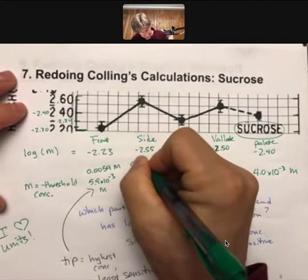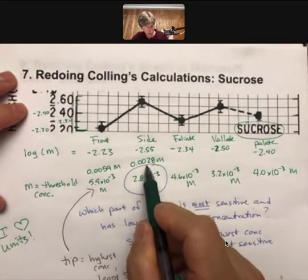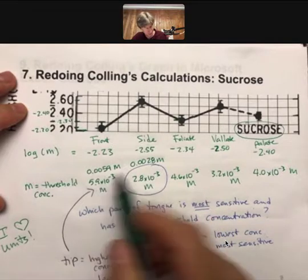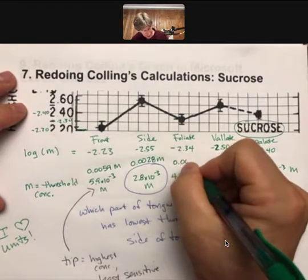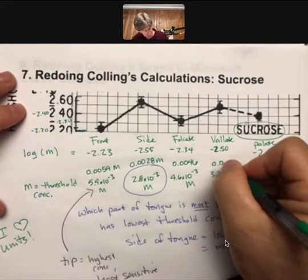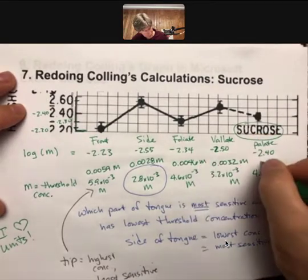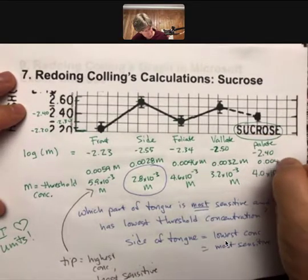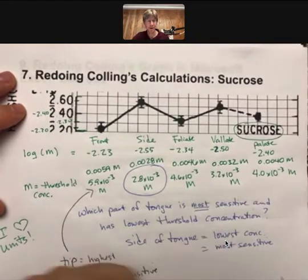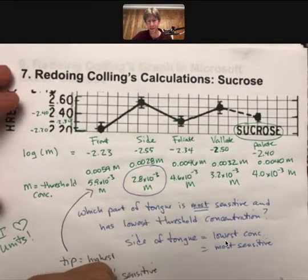And 0.0028, so we can see that this is smaller than this one, 0.0046. Had I done it on the calculator, 0.0032 molarity, molarity 0.0040 molarity. And those numbers are fine, you can use either version of them.